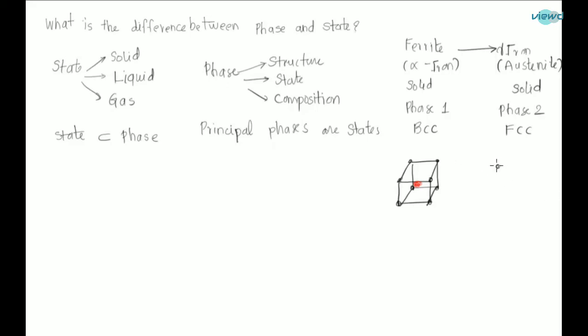And now, how does face-centered cubic look like? Eight atoms at eight corners of unit cell. One, two, three, four, five, six. Six atoms on six faces. This is the phase.